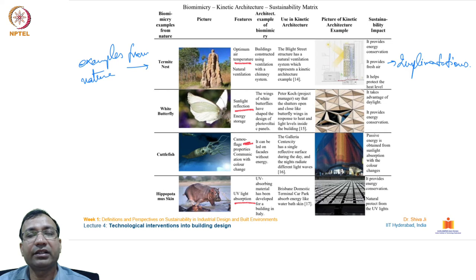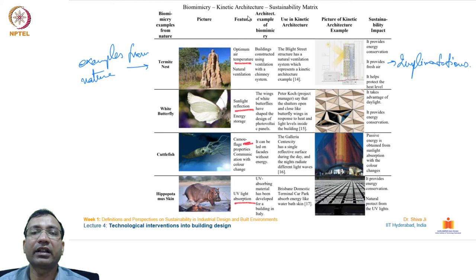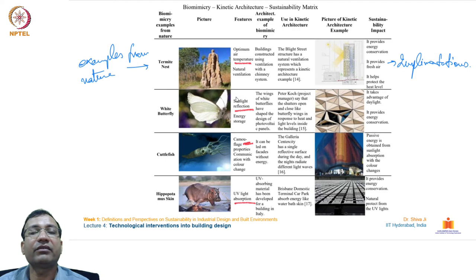A matrix slide shows four biomimicry examples and how inspiration was translated into final design. The four cases are: termite nest, butterfly, cuttlefish, and hippopotamus skin. The termite nest feature is maintaining optimum air temperature — the natural ventilation system efficiently keeps interior ambient conditions suitable for habitation regardless of external heat or cold.